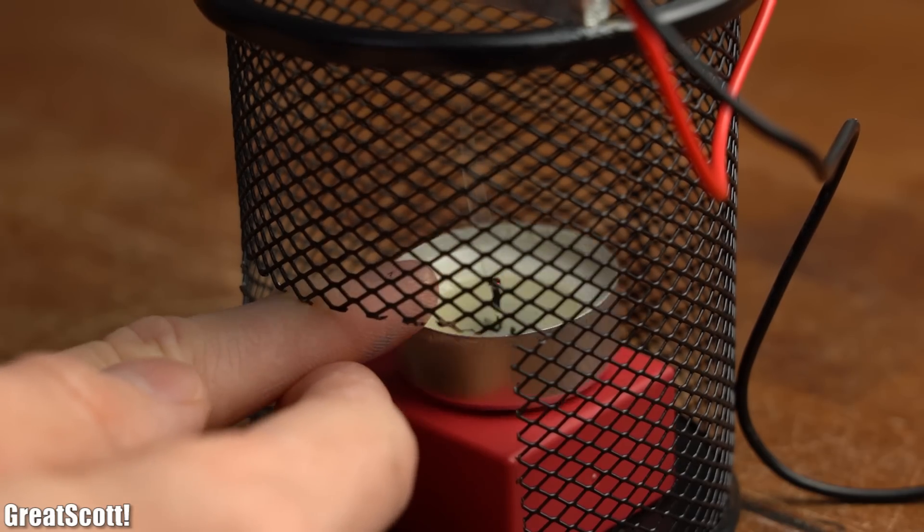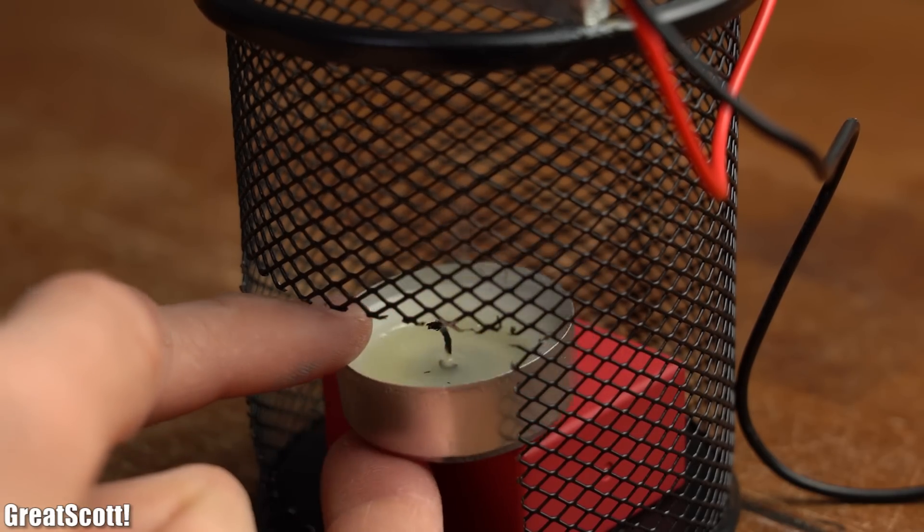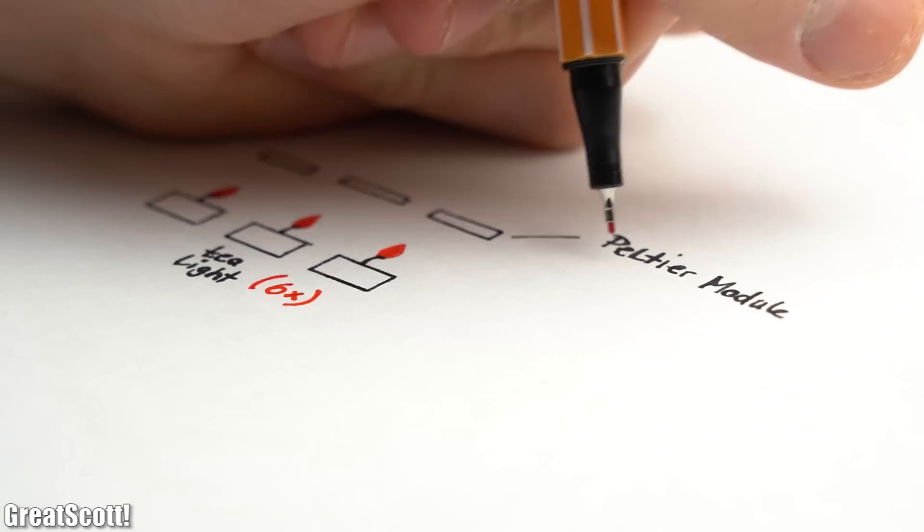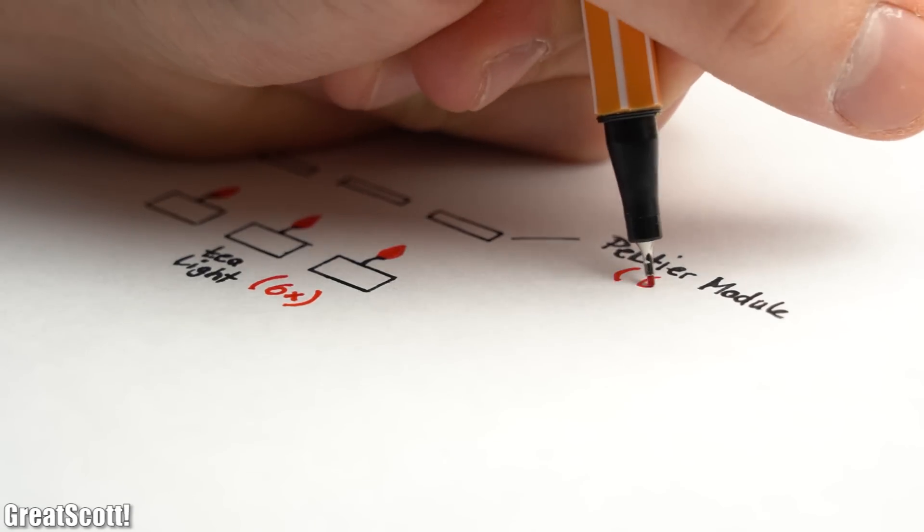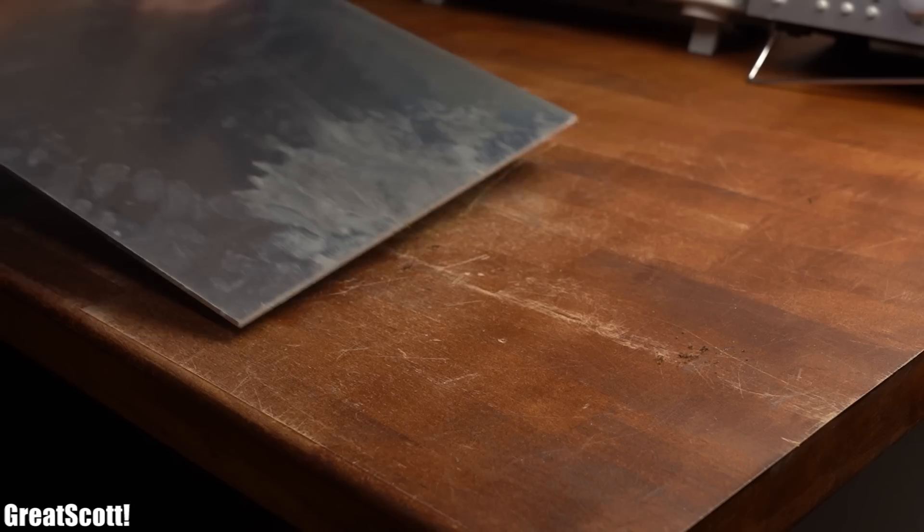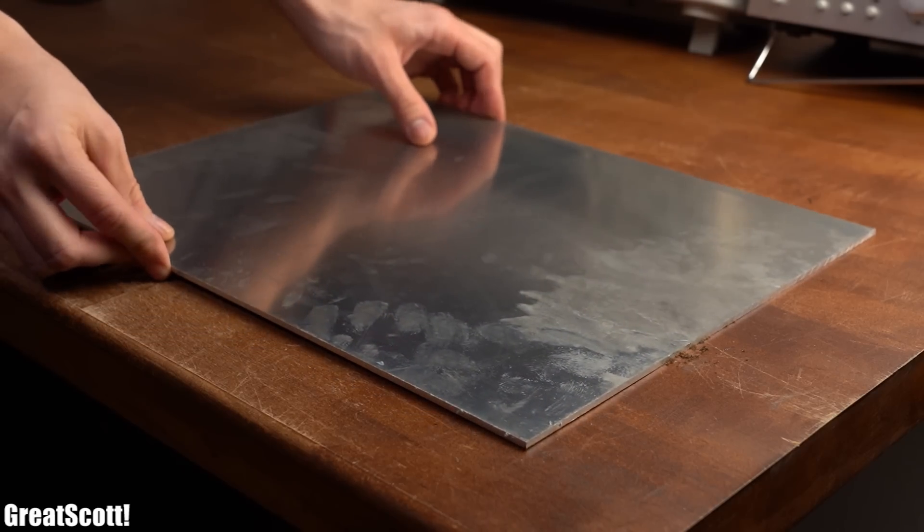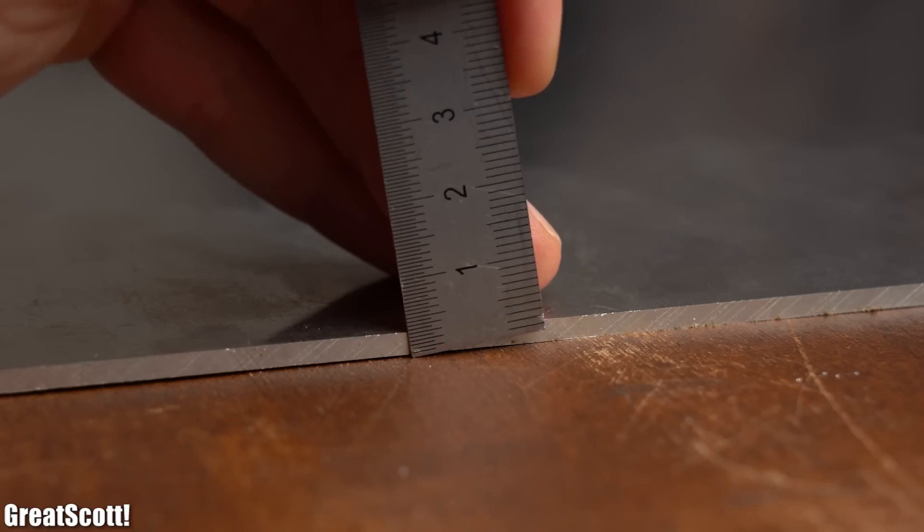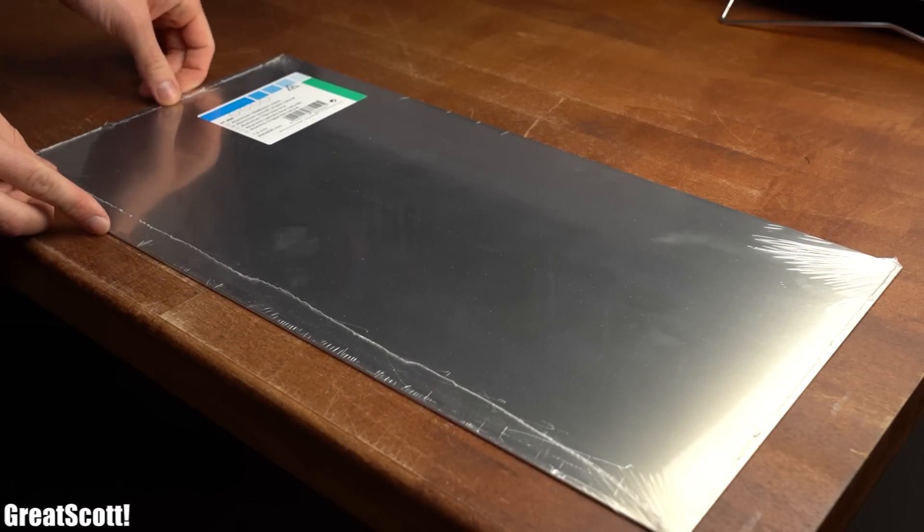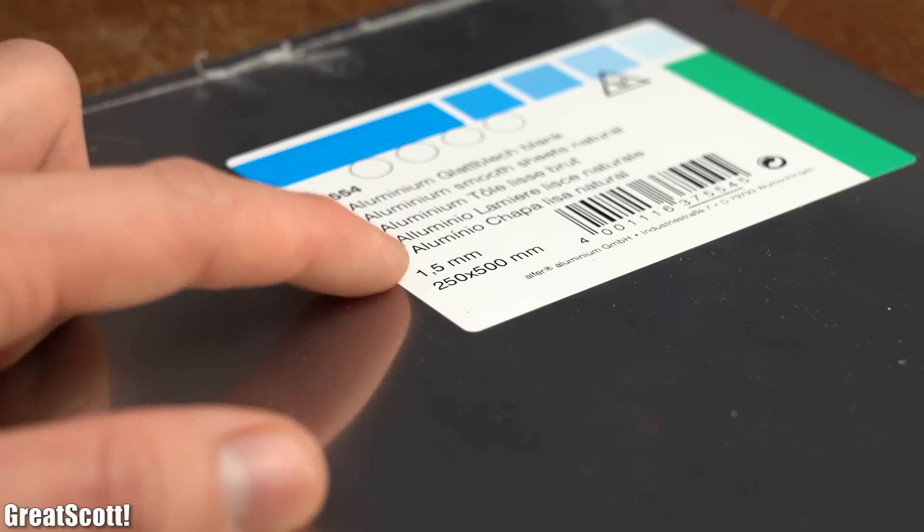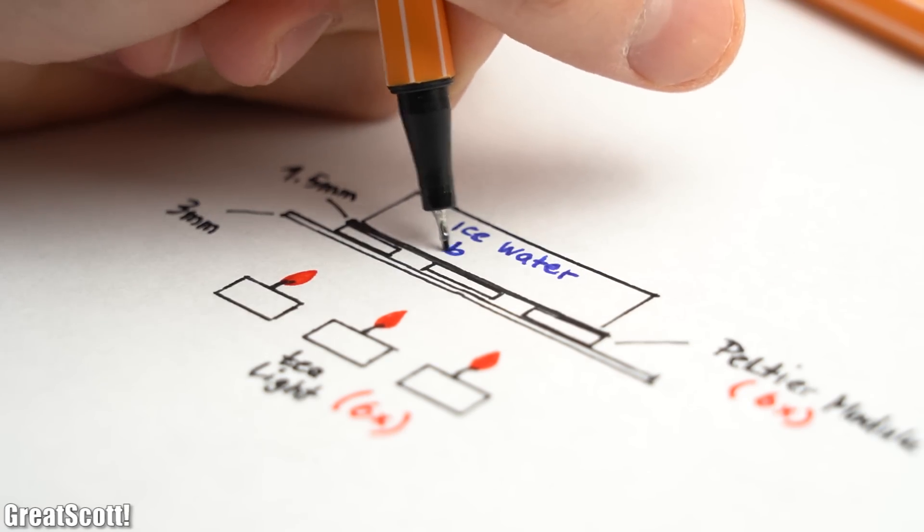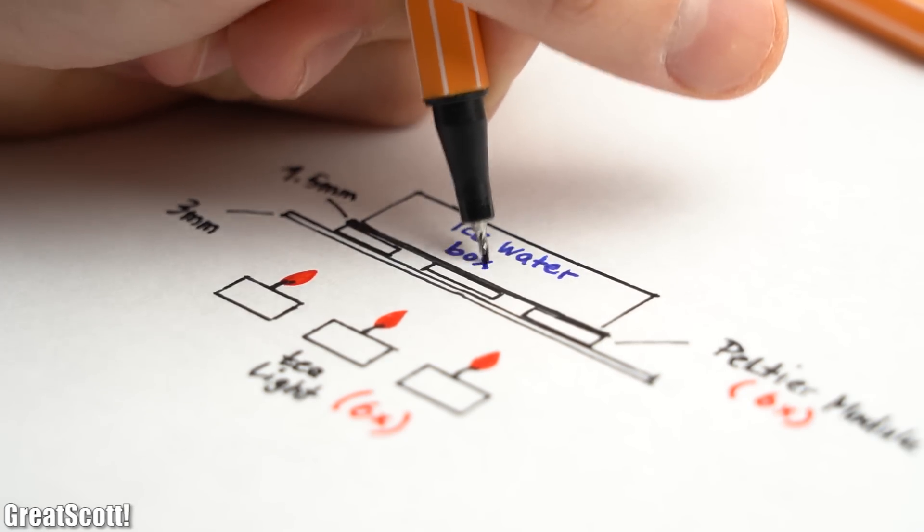But nevertheless, now that we know that the system's output capabilities are fake, let's move on to my own design. My idea is to use 6 tea lights simultaneously along with 6 Peltier modules. For the hot side I will be using a sheet of aluminum with a thickness of 3mm while for the cold side I will be using another aluminum sheet with a thickness of only 1.5mm onto which I will be placing an aluminum box filled with ice water to keep everything cool.